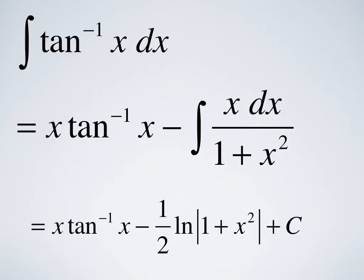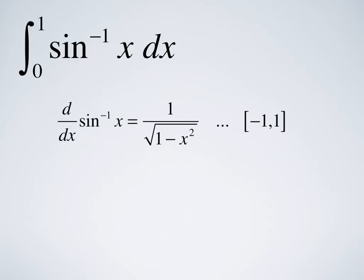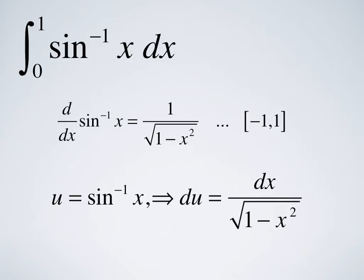Now let's do another example, and this time we'll do a definite integral. We have the integral from 0 to 1 of sine inverse of x dx. The procedure is exactly the same. We're going to use the fact that d/dx of the inverse sine function is 1 over the square root of 1 minus x squared, as long as we're in the interval minus 1 to 1, which we are — 0 to 1. So we take u equals sine inverse of x, so du is dx divided by the square root of 1 minus x squared.